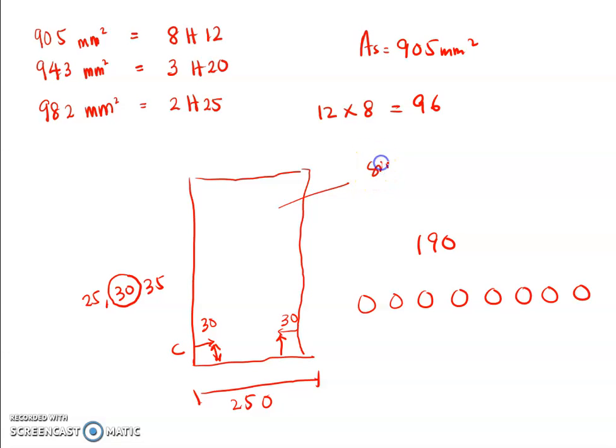If we want to arrange eight times of reinforcement, one, two, three, four, five, six, seven, eight, we need to also consider the size of aggregate. Concrete consists of cement, aggregate, and also the fine aggregate. The aggregate size is from 20 to 25. So we take the 20 size. This gap is one, two, three, four, five, six, seven. Seven times 20 is 140. So the balance is just 50. And we need to place the eight numbers of 12 diameter which is 96. So, not enough.